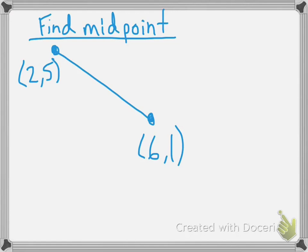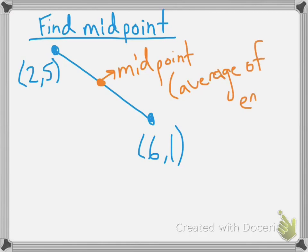So if you think about it, the middle, the midpoint, is like right in the middle of the line. So what that is, that midpoint is basically the average of the two points, or you could think about it as the average of the endpoints.